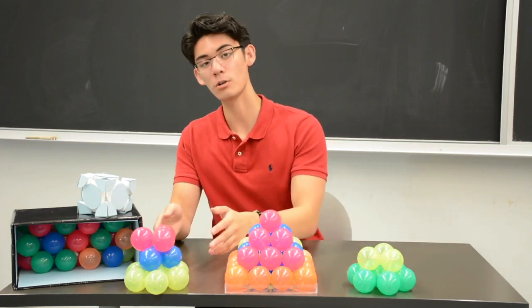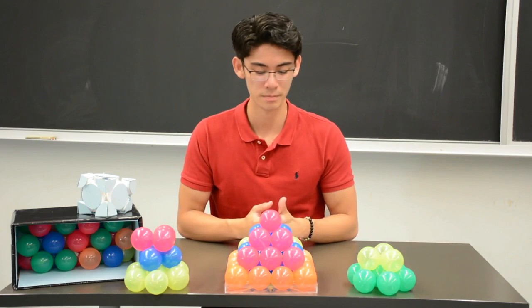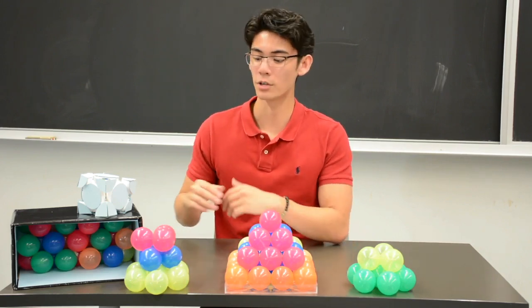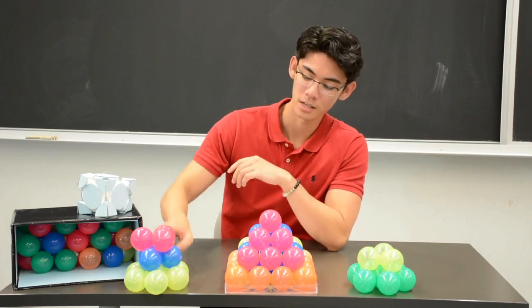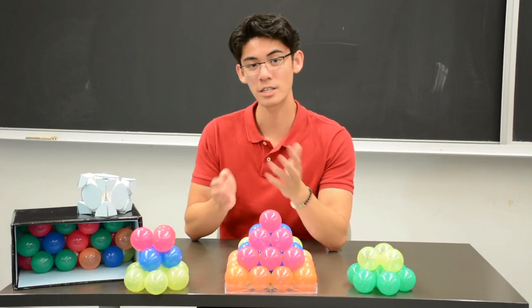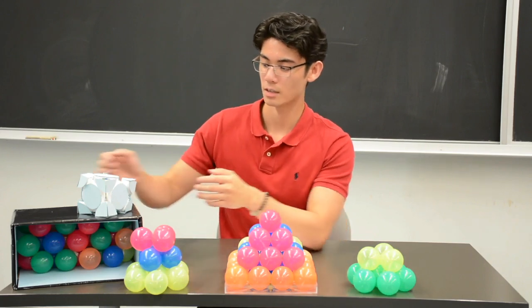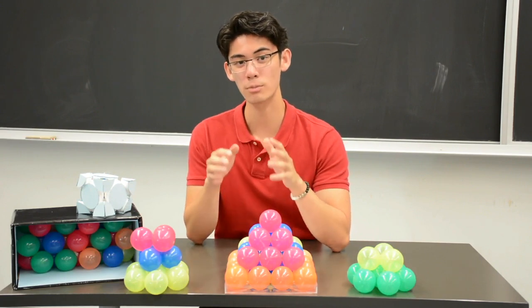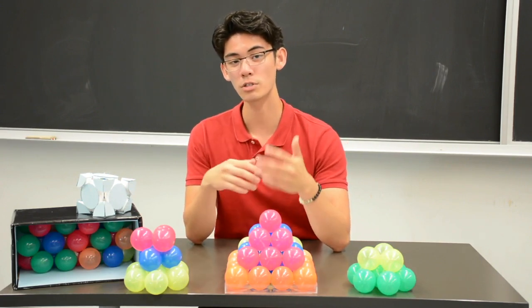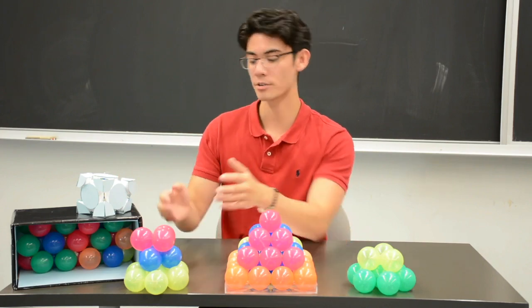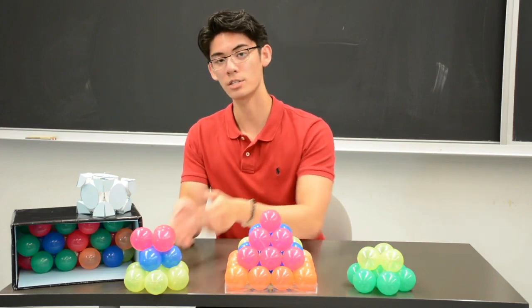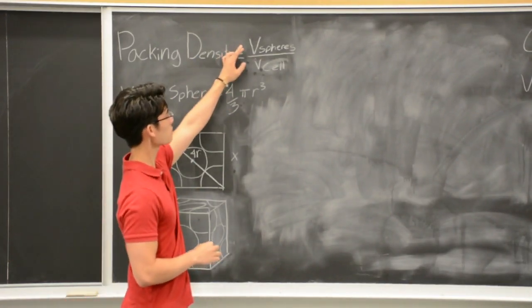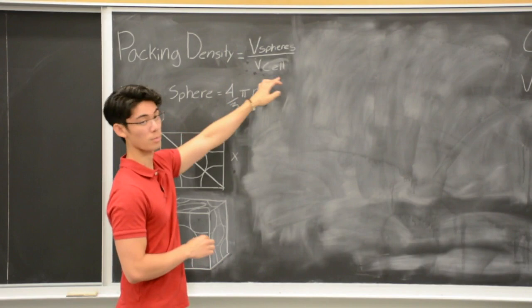Let's consider the cubic close packing arrangement and find its packing density. We determine this by calculating the packing density of the cube which is embedded in the arrangement, and this is known as a unit cell. This unit cell here has symmetric properties and has partial cubic arrangement. So with multiple cubes, we can stack them together, recreating the cubic arrangement. The packing density formula is given by the volume of the spheres divided by the volume of the unit cell.